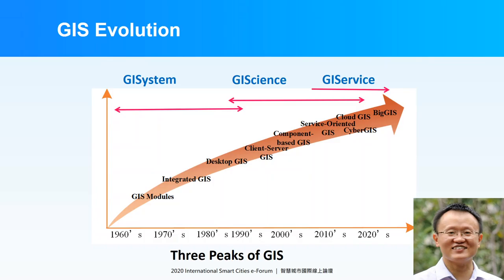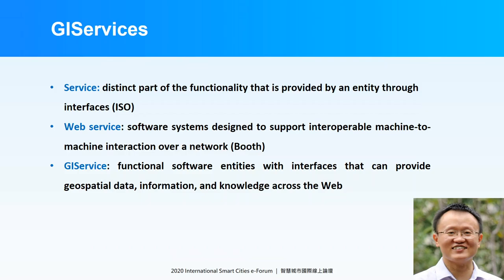The definition of service, from the ISO perspective, is about the distinct part of functionality by IoT through interface. The web service can be defined as a software system to support the interoperable machine-to-machine interaction of a network. So what is about GIS service in this context? We are talking about the functional software entity with the interface that can provide geospatial data, information, and knowledge across the web.